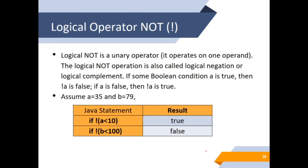The next logical operator is NOT (!). NOT is a unary operator — the logical NOT operation is also called logical negation or complement. If some condition is true, the exclamation mark will make it false. Assume A equals 35 and B equals 79. If !(A < 10): since 35 < 10 is false, NOT false gives True. If !(B < 100): since 79 < 100 is true, NOT true gives False.